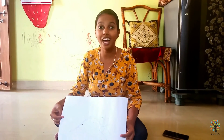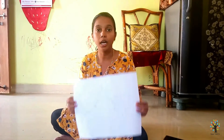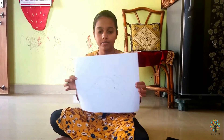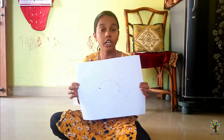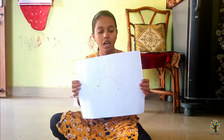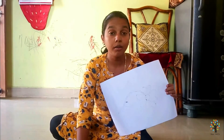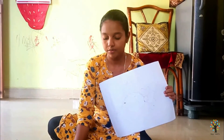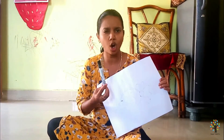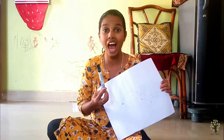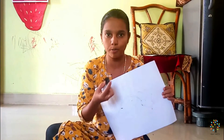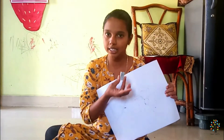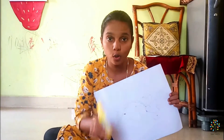For that, we need chart paper. If you don't have chart paper, no problem — take A4 sheets. Then we need a pencil. We need a marker, or if you have a black sketch, that is also okay. Then a sharpener, eraser, glue, and spices.